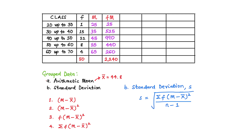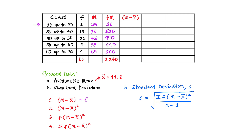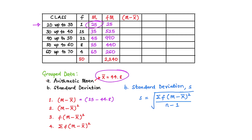Starting with step 1 — m minus x-bar. We come to the table and write the m minus x-bar column, which is the midpoint minus the sample mean, for each class level. For the first class, the midpoint is 25 minus the sample mean of 44.8. So 25 minus 44.8 equals minus 19.8. For the first row, we have minus 19.8.